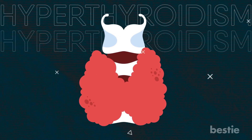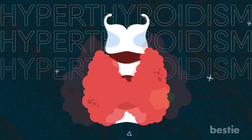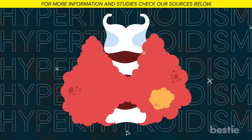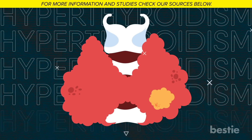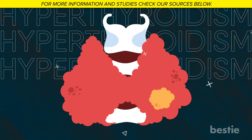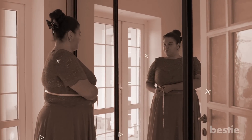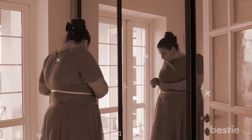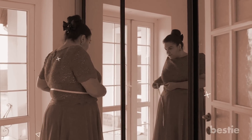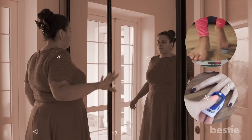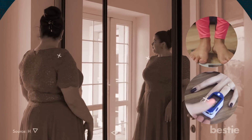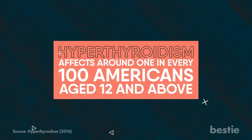On the other hand, when your thyroid gland produces more thyroid hormone than you need, the condition is known as hyperthyroidism. Hyperthyroidism causes your body's metabolism to speed up, resulting in unexpected weight loss and a faster pulse. Hyperthyroidism affects around 1 in every 100 Americans aged 12 and above.